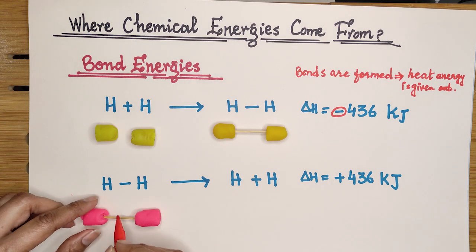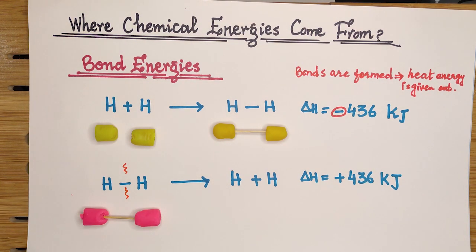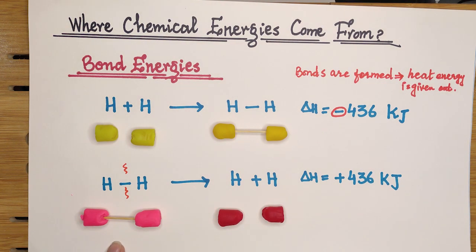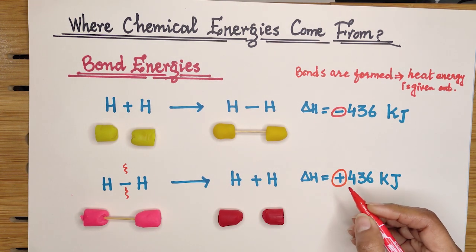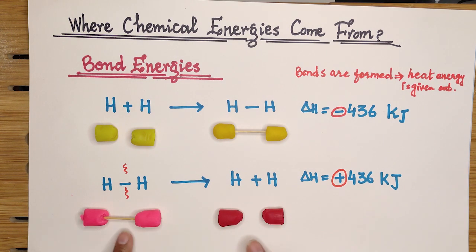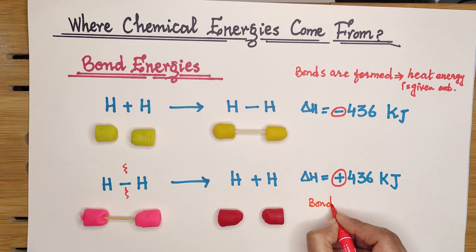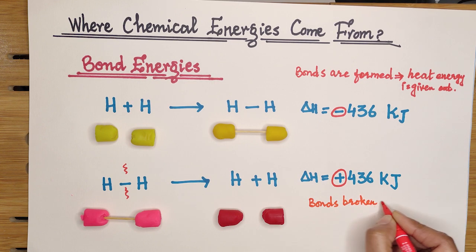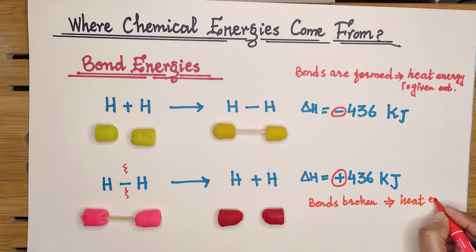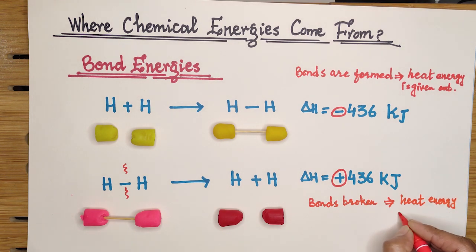When the covalent bond in the hydrogen molecule is broken, we obtain two hydrogen atoms. To break the bond, we must provide heat energy, so the same amount of heat energy (436 kJ) is absorbed. In summary: when bonds are broken, heat energy is absorbed.